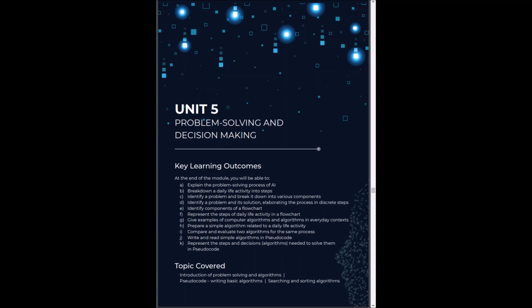The key learning outcomes of this unit are to understand the problem-solving process of AI. We will also try to break down daily life activities into steps and these steps will eventually become the elements of our flowchart. We will try to understand and identify different components of flowchart. We will also compare two algorithms of the same process.